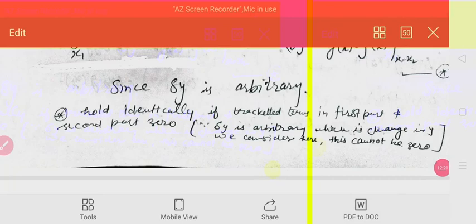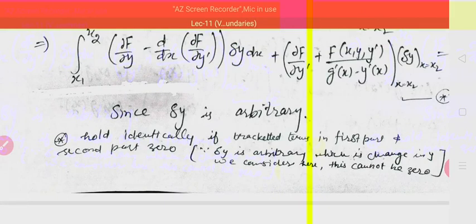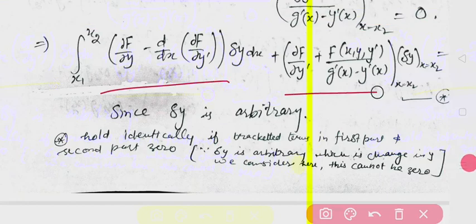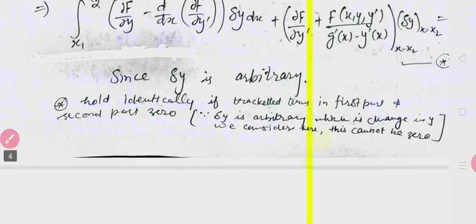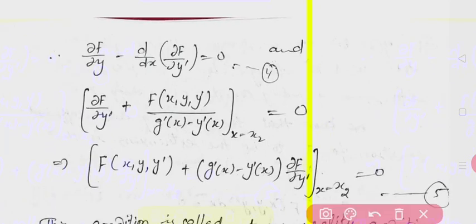Now this star condition will hold when individually each part equals zero. Since delta y is arbitrary and delta y at x2 is also arbitrary, each term must individually equal zero. So the integral term equals 0 and the boundary term equals 0.